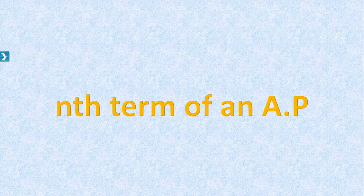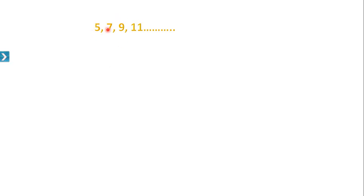In this video you are going to learn about the nth term of an AP. Look at the sequence 5, 7, 9, 11 — is it in AP? The difference between 7 and 5 is 2, between 9 and 7 is 2, between 11 and 9 is 2. Since common differences are equal, it is an AP. The first term, denoted by a, is 5.